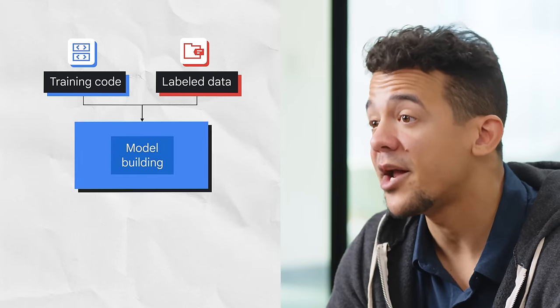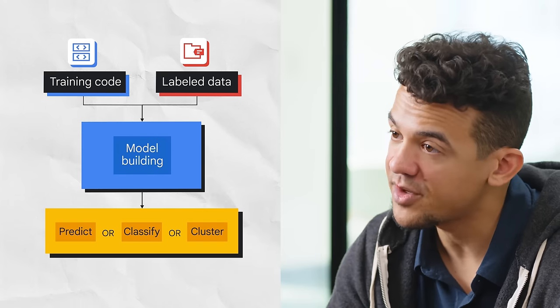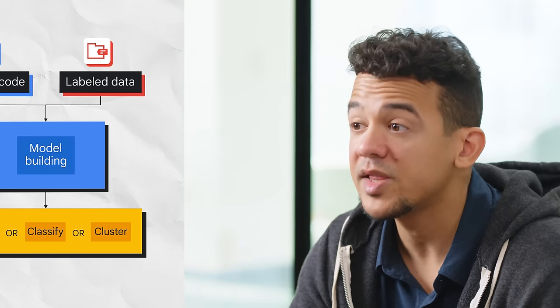The response will be based on all the massive large data the model was already trained on. So the traditional ML supervised learning process takes training code and labeled data to build a model. Depending on the use case or problem, the model can give you a prediction, classify something, or cluster something. Now let's check out how much more robust the generative AI process is in comparison. The generative AI process can take training code, labeled data, and unlabeled data of all data types, and build a foundation model. The foundation model can then generate new content — text, code, images, audio, video, and more. We've come a long way from traditional programming, to neural networks, to generative models.